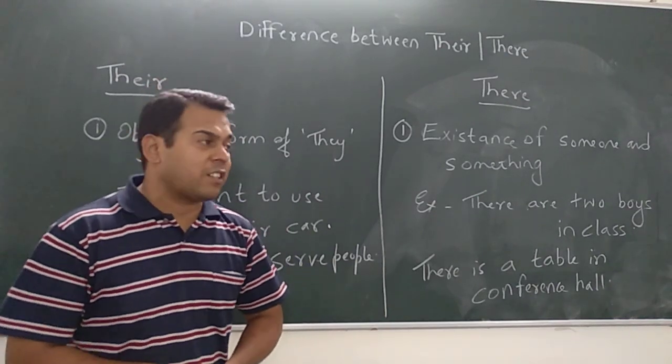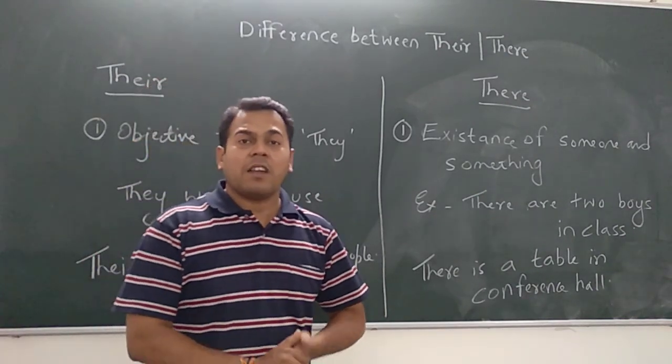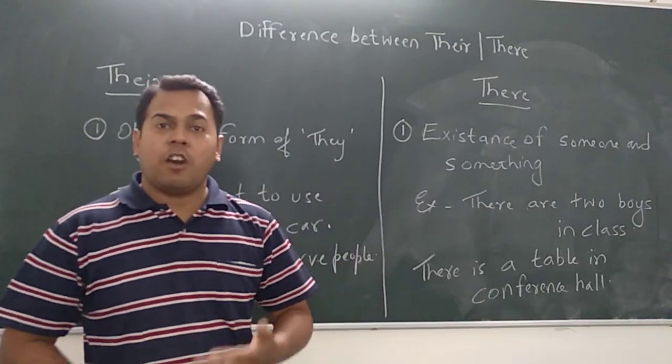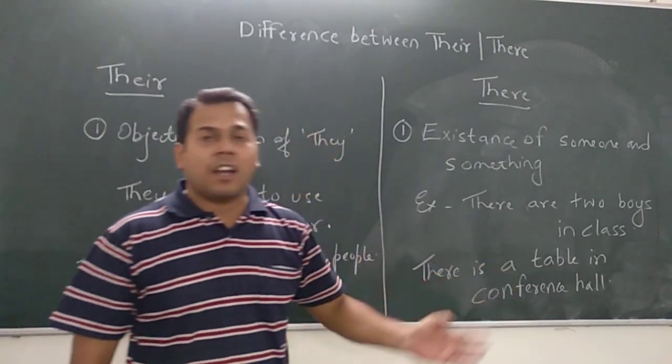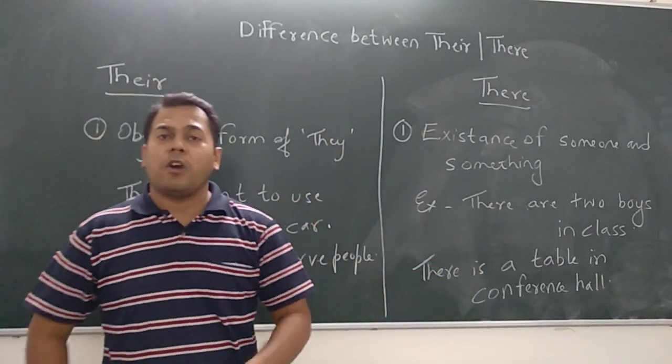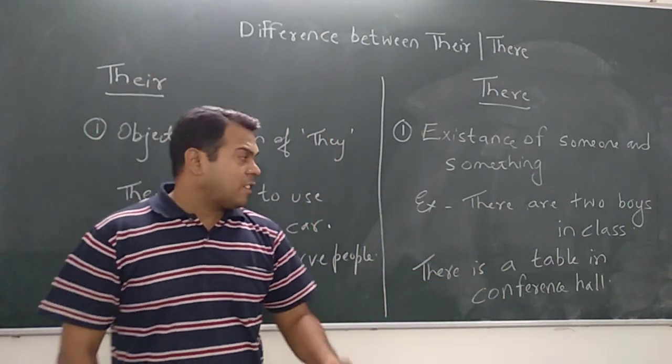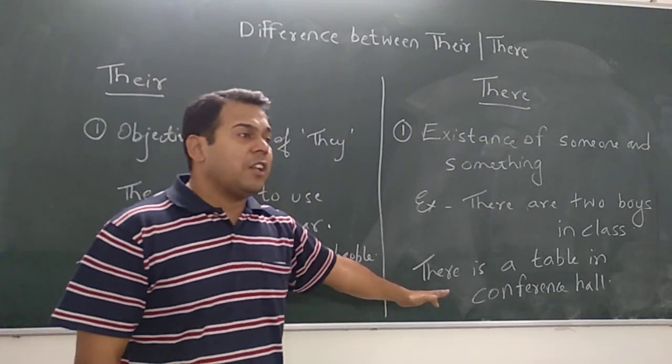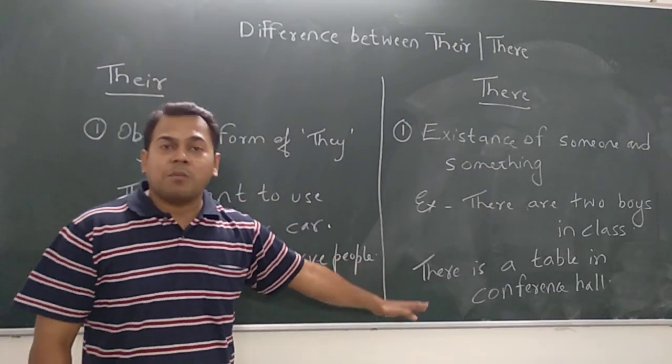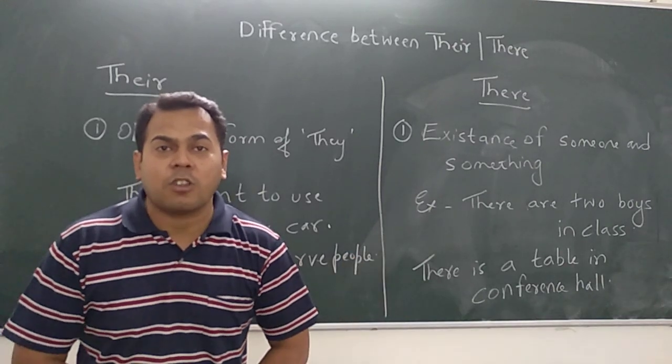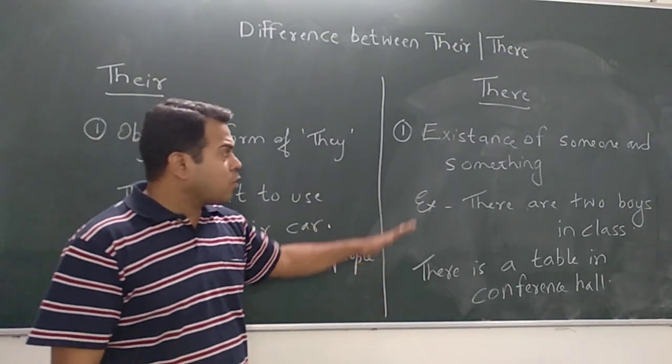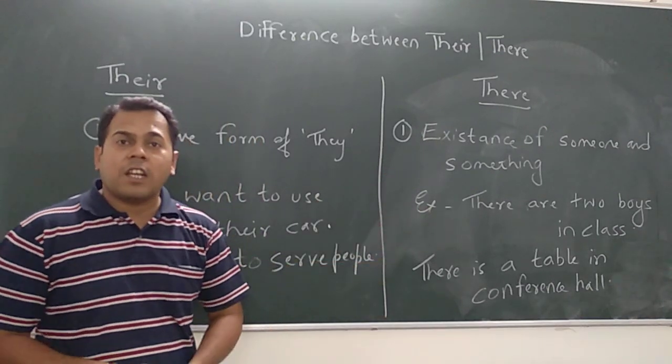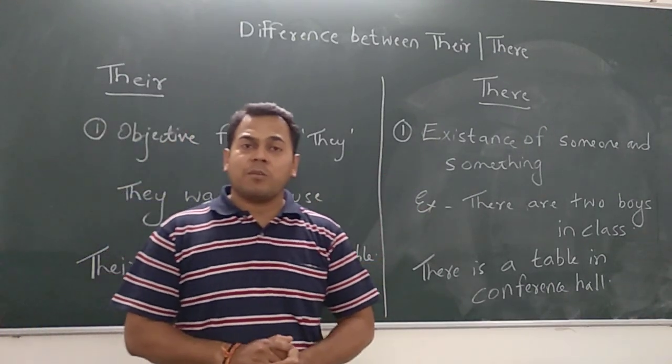Now look at these examples friends. These examples can help you to understand the real meaning of T-H-E-R-E there. There are two boys in class. That means there are two boys sitting in class. Second example: there is a table in conference hall. That means there is a single table or a big table in a conference hall.